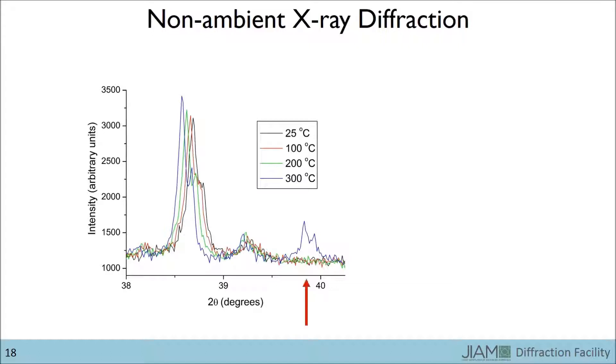The first item to note is that we see a new peak appear just below 40 degrees 2 theta in the pattern collected at 300 degrees Celsius.